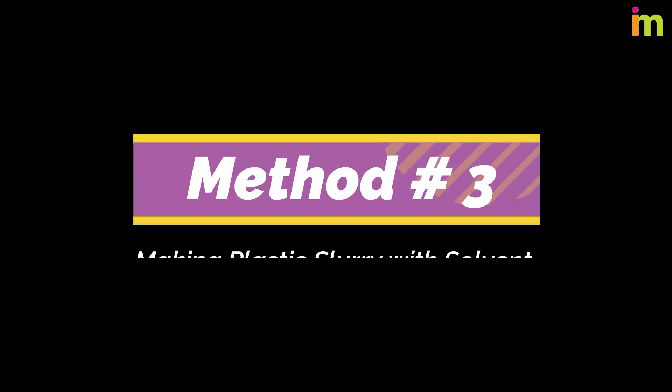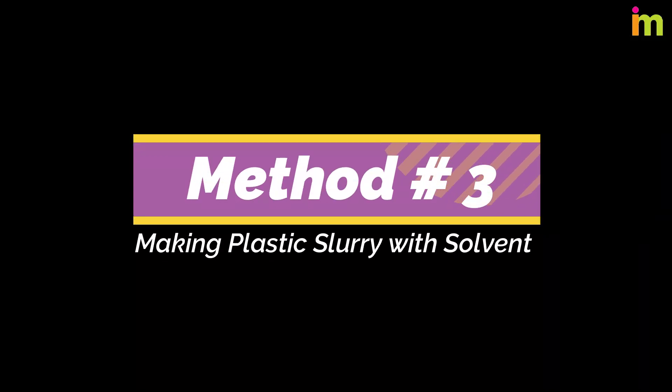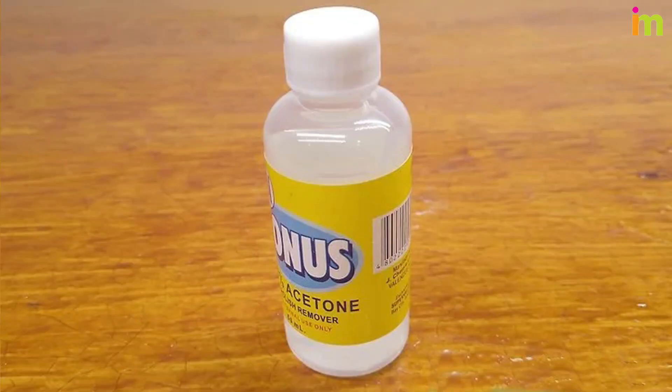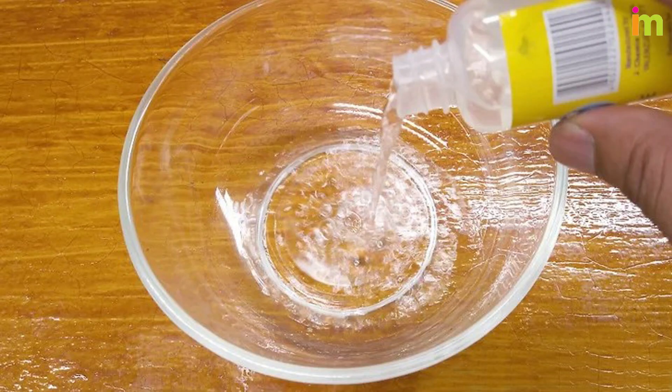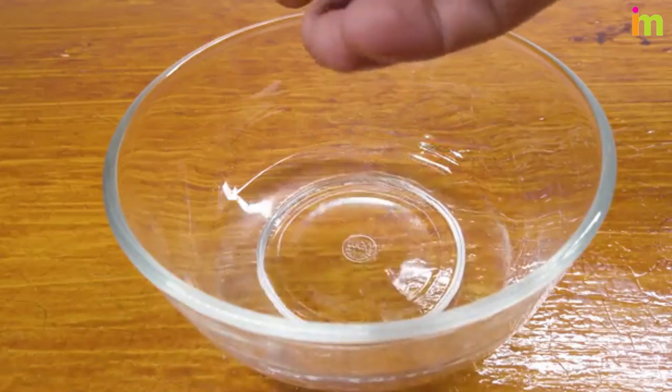Method Number 3: Making Plastic Slurry with Solvent. Acetone is a strong solvent that can dissolve plastic down completely. You can use acetone to make a putty of melted plastic that is great for filling in cracks. Fill a glass container with acetone.